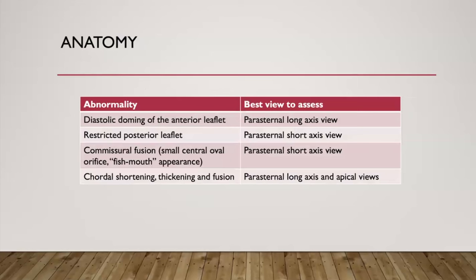Where are these features best seen? Diastolic doming of the anterior mitral leaflet is best seen in the parasternal long axis view. Restricted posterior leaflet motion can be seen in parasternal long axis, but best seen in parasternal short axis. Commissural fusion is best seen in parasternal short axis or 3D views, giving the classic small oval or funnel-shaped opening — the classic fishmouth appearance. Chordal shortening, thickening, and fusion may be seen in parasternal long axis views and also in 4-chamber apical views.